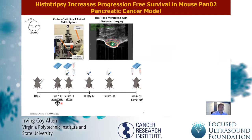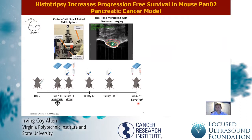Our immediate time point is immediately after treatment, usually to evaluate the ablation zone, followed by 24 hours post, which we call an acute harvest. We then have multiple time points — some of the data today will be from day seven, day 14, and from our survival studies. Survival in this model typically spans 42 to 51 days.